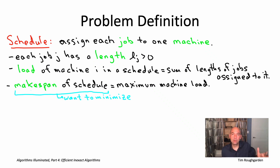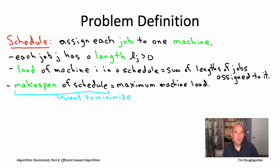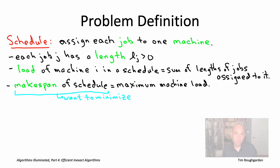Notice the load on a machine is the same no matter what order the jobs are processed — it's just the sum of their lengths. Therefore machine loads and the makespan don't depend on the ordering of jobs on the machines. We're just going to worry about which machine each job gets assigned to, and we want to minimize the makespan. Let's pause for a quick quiz to make sure these definitions are crystal clear.